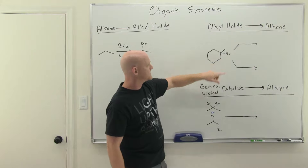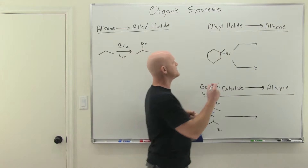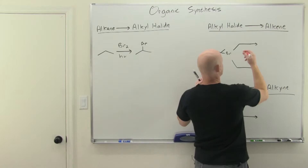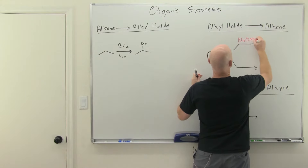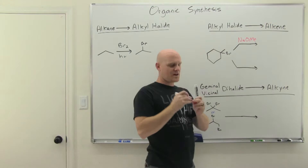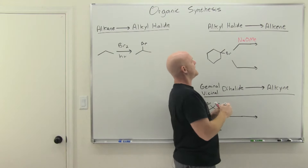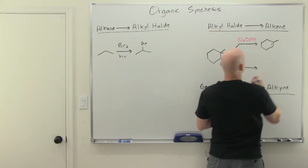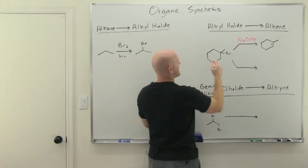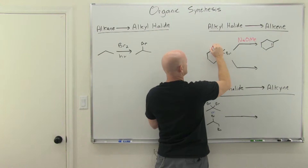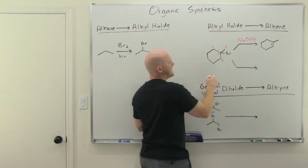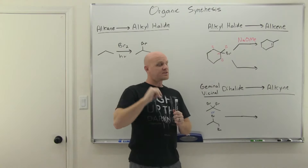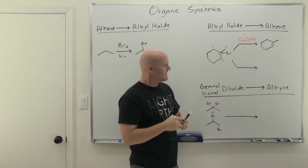With a tertiary halide and a standard base — not a bulky one, like sodium hydroxide, sodium methoxide, or sodium ethoxide — the Zaitsev product is going to be the major product. Here's our alpha carbon, with beta carbons on multiple sides. The most substituted beta carbons are the ones with the fewest hydrogens, and that's what Zaitsev predicts as the major product.